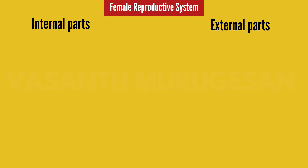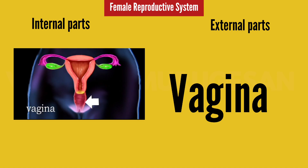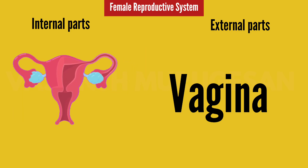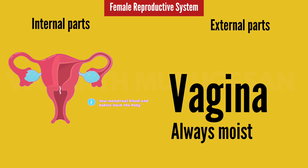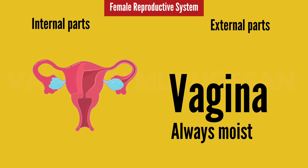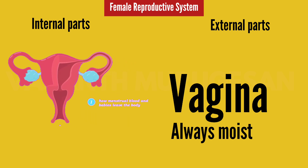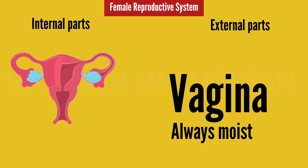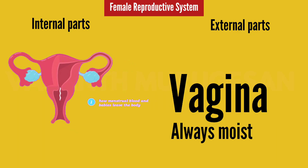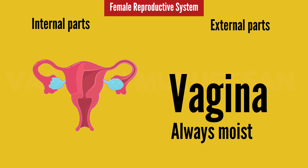Let's begin with the Internal Parts. First, the Vagina. This is outside the body. It is a muscular structure. Because the area is open, there are many infections and many organisms that can enter. Therefore, females are more susceptible to UTI — Urinary Tract Infection.